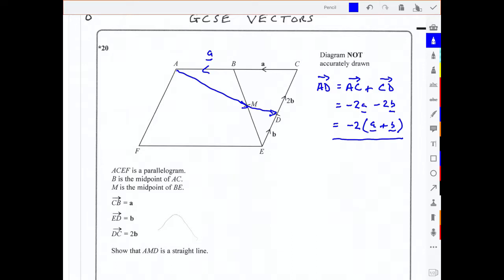Now we want to find the vector AM. So AM will be AB plus BM. But we don't know what BM is. However, if I find BE, then BM is half of it. I know that because I was told that M was the midpoint of BE.